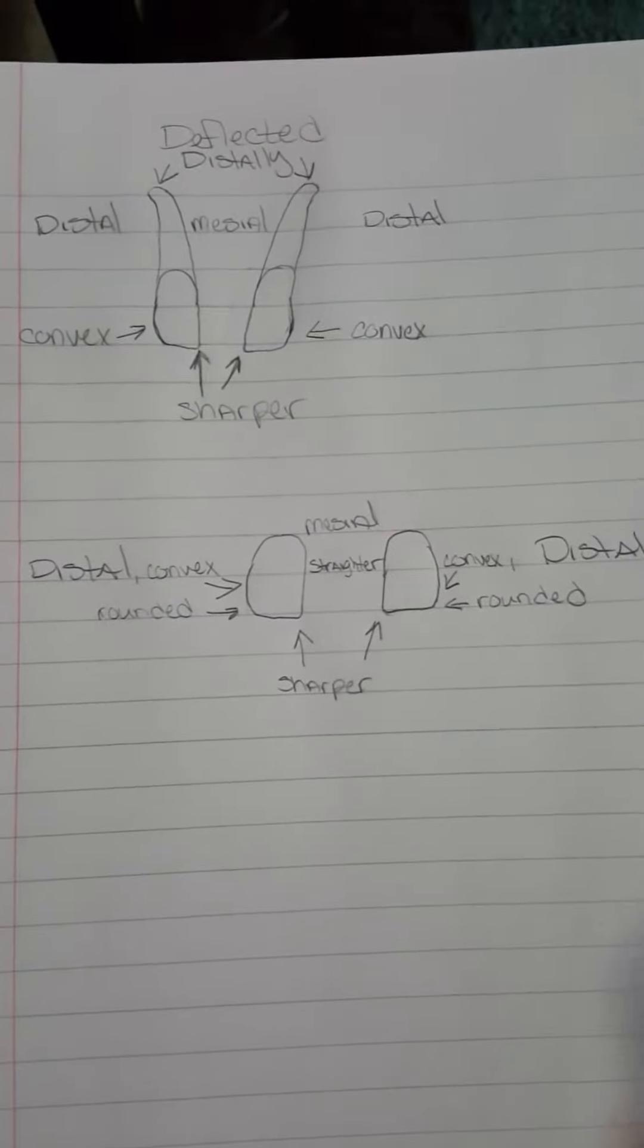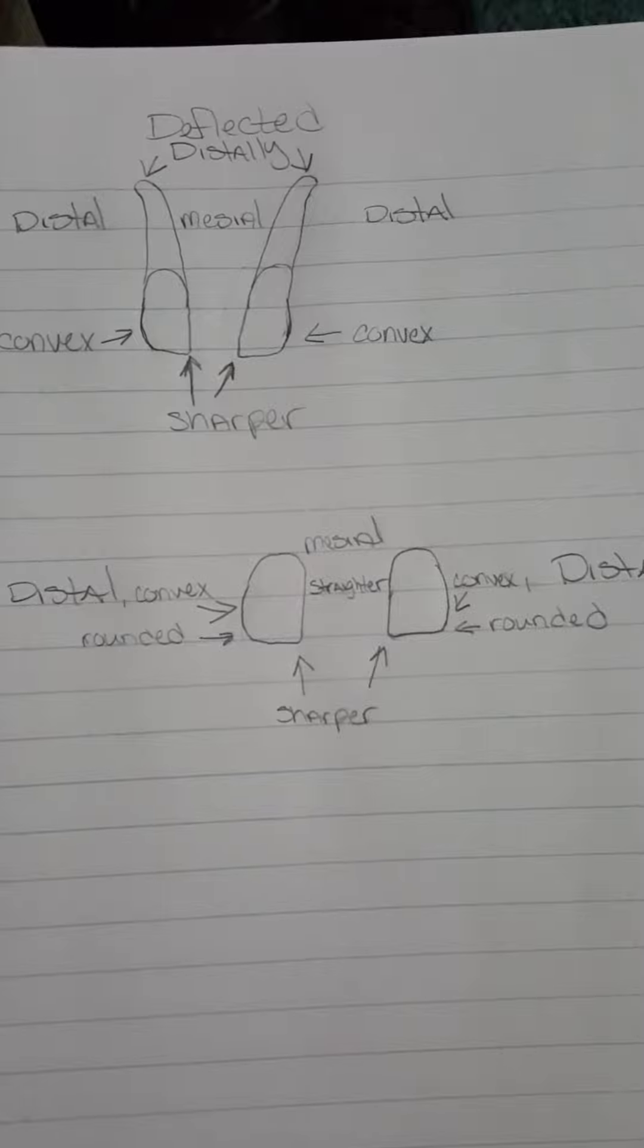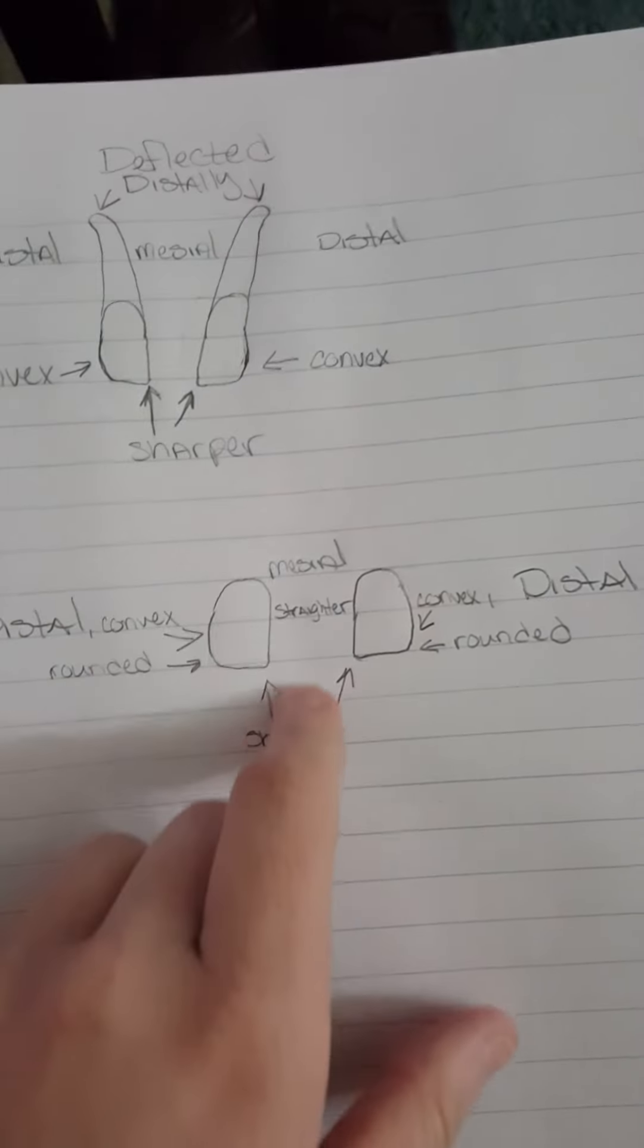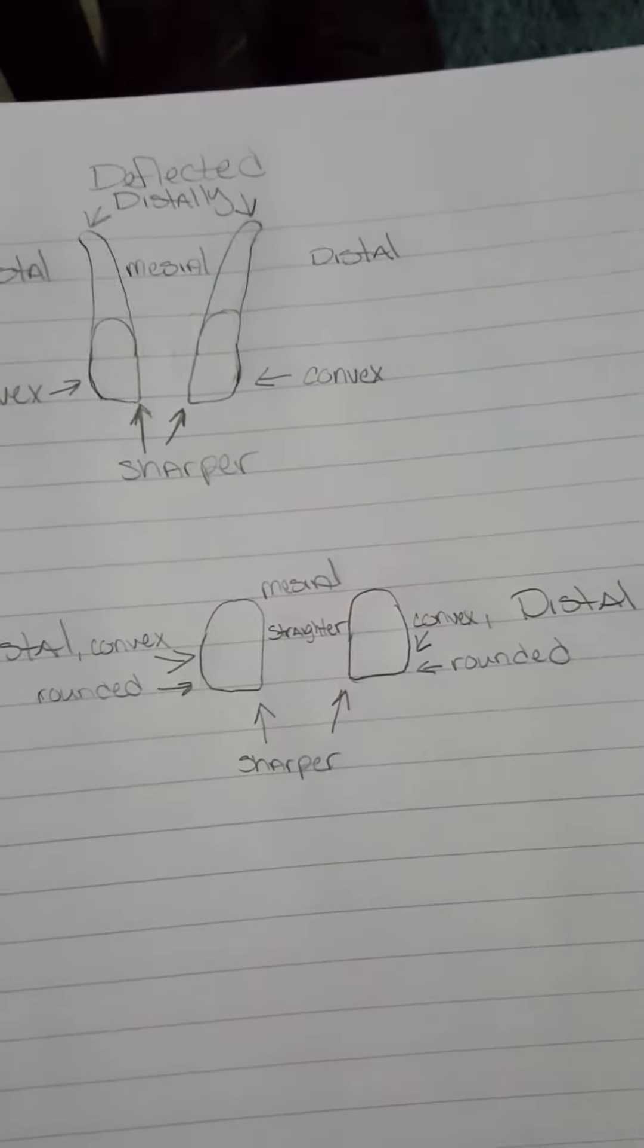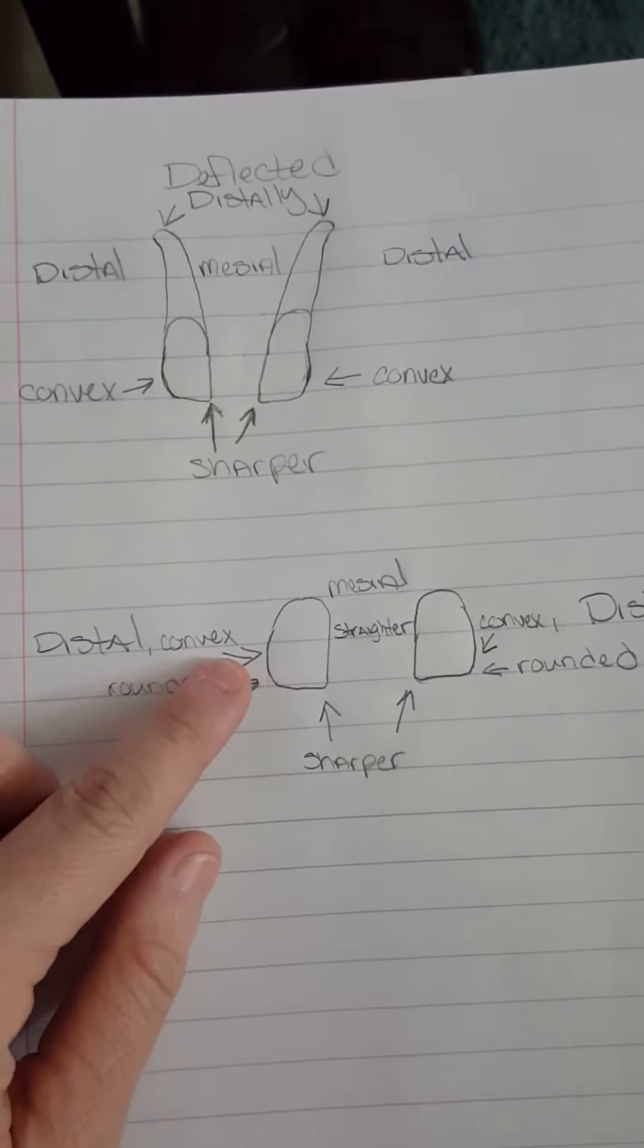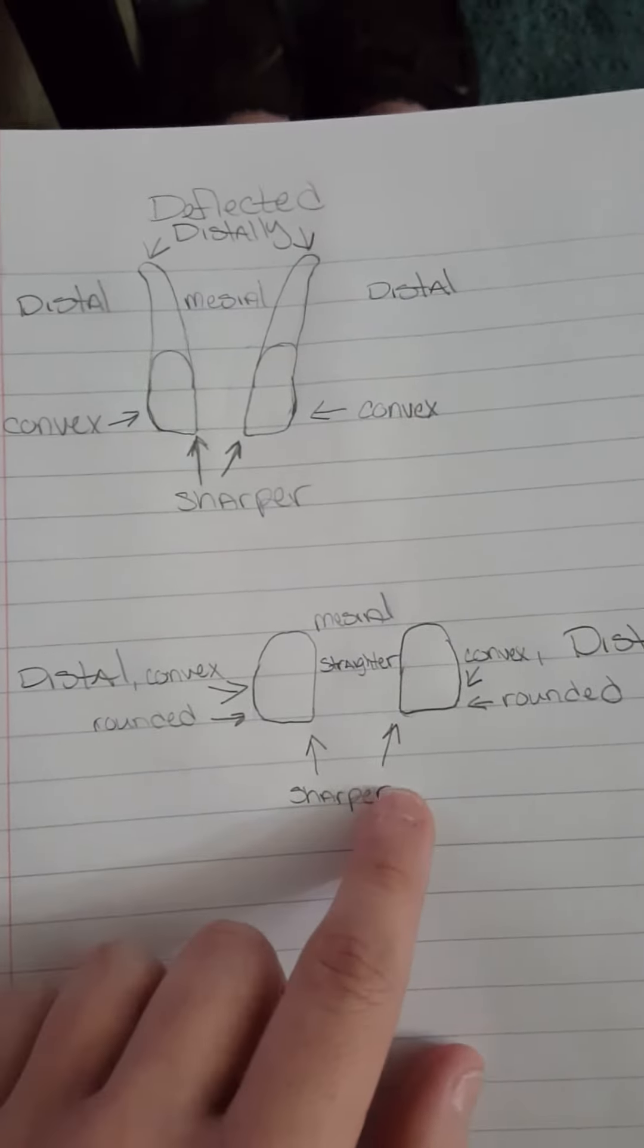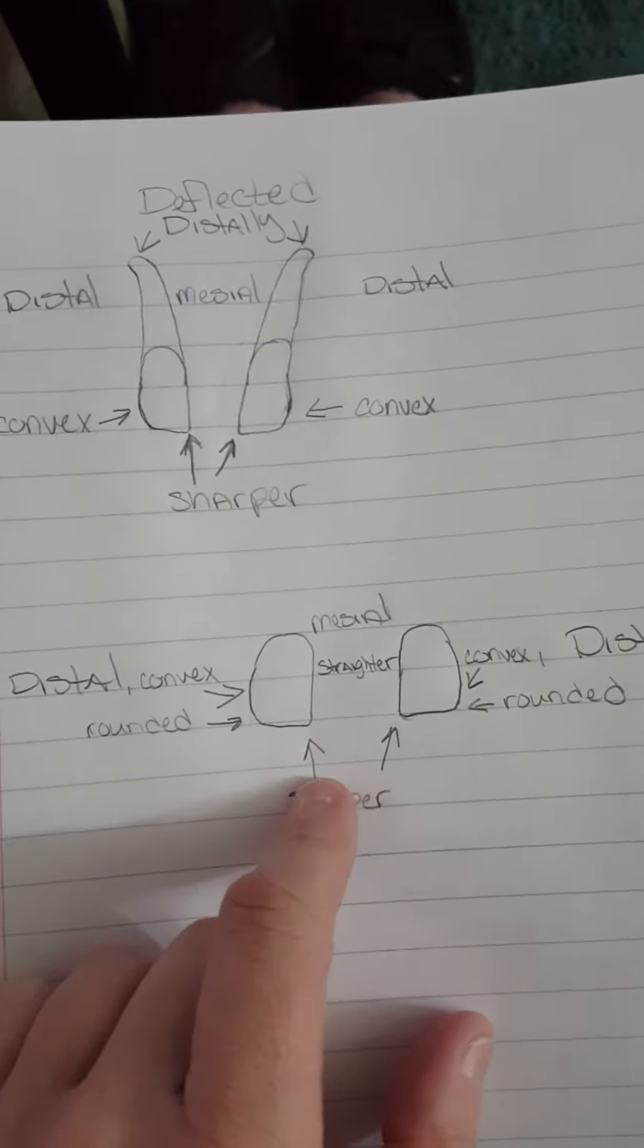The central incisors are very similar in how to tell the difference. So your mesial edge is straight where your distal edge is more rounded or convex. The edge of it right there is rounded where the mesial edge is sharper.